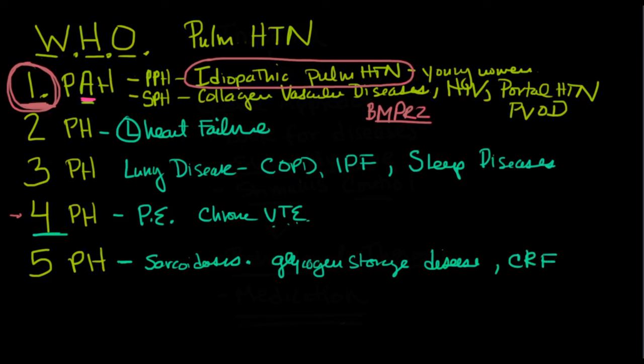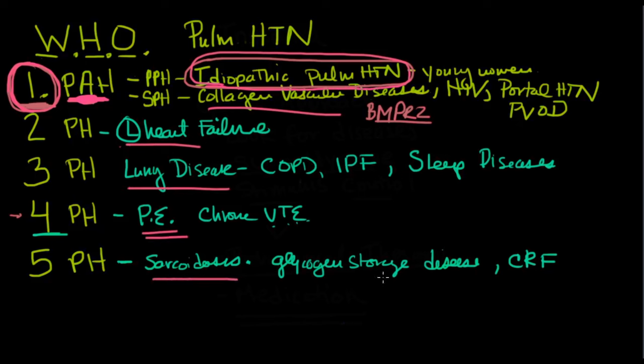What I want you to take home from this is number one is PAH. It has to do with the artery. It's pulmonary arteriolar hypertension, and the biggest one that fits into that category is the idiopathic pulmonary hypertension. But there's also collagen vascular diseases. Number two, left heart disease. Number three, lung disease. Number four, pulmonary embolism. Number five, sort of the grab bag like sarcoidosis. There's also amphetamines, which can fall into type one.